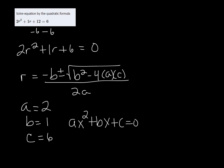So if I plug those values in, I can see what we get for r. So it's going to be -1 ± √(1² which is 1, minus 4 × 2 × 6) all over 2 × 2.